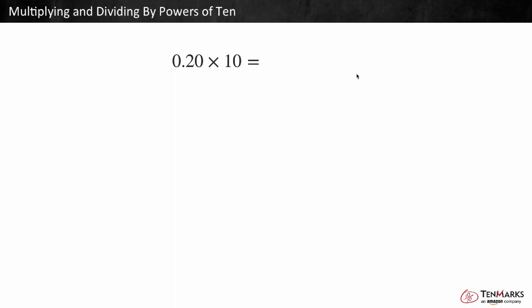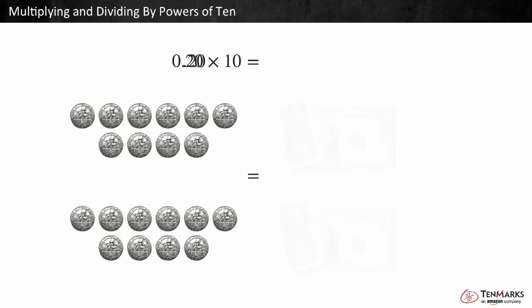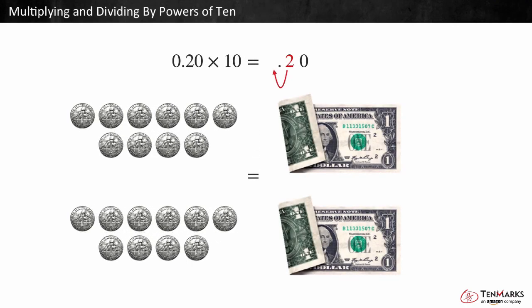Let's look at 20 hundredths times 10. 20 hundredths is like 20 cents. Two dimes are the same as 20 cents. If we multiply two dimes by 10, we will get two dollars, or 2.0. The digits shifted to the left one time.